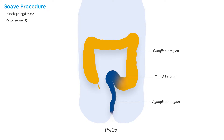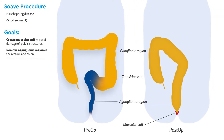This operation has three goals. First, create a muscular cuff by removing the rectal mucosa — this protects the structures of the pelvis. Second, remove the aganglionic segment of the rectum and colon. And third, prevent fecal incontinence by protecting the pectinate zone within the anal canal.